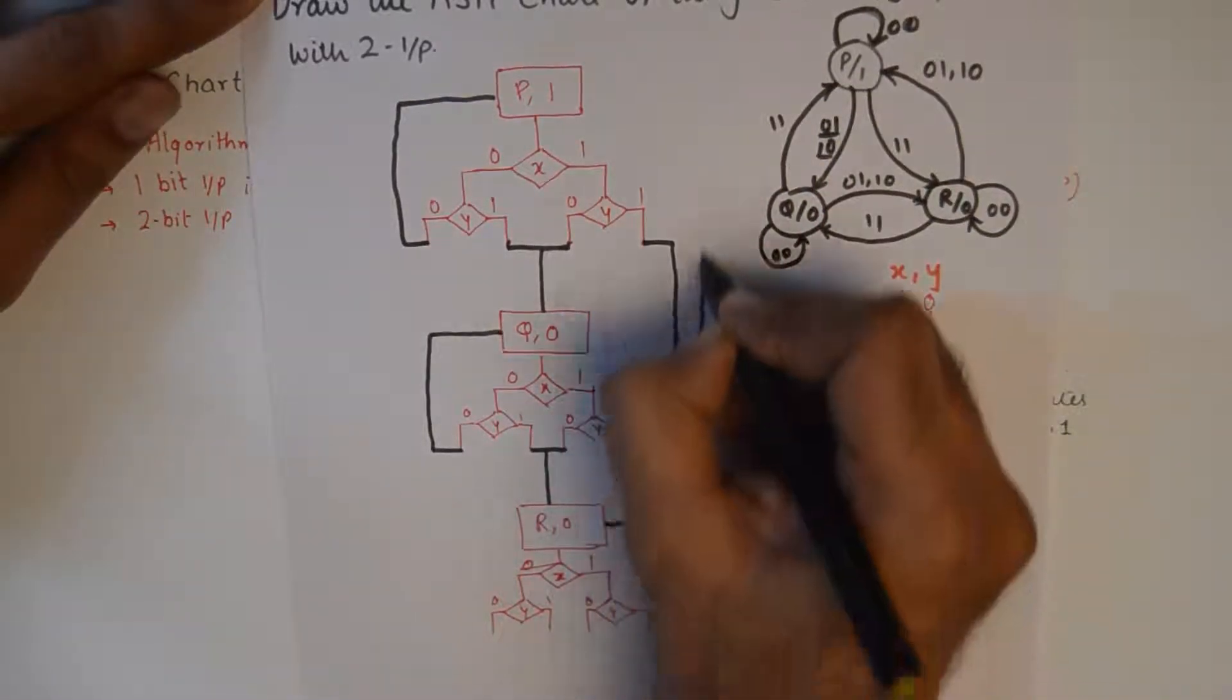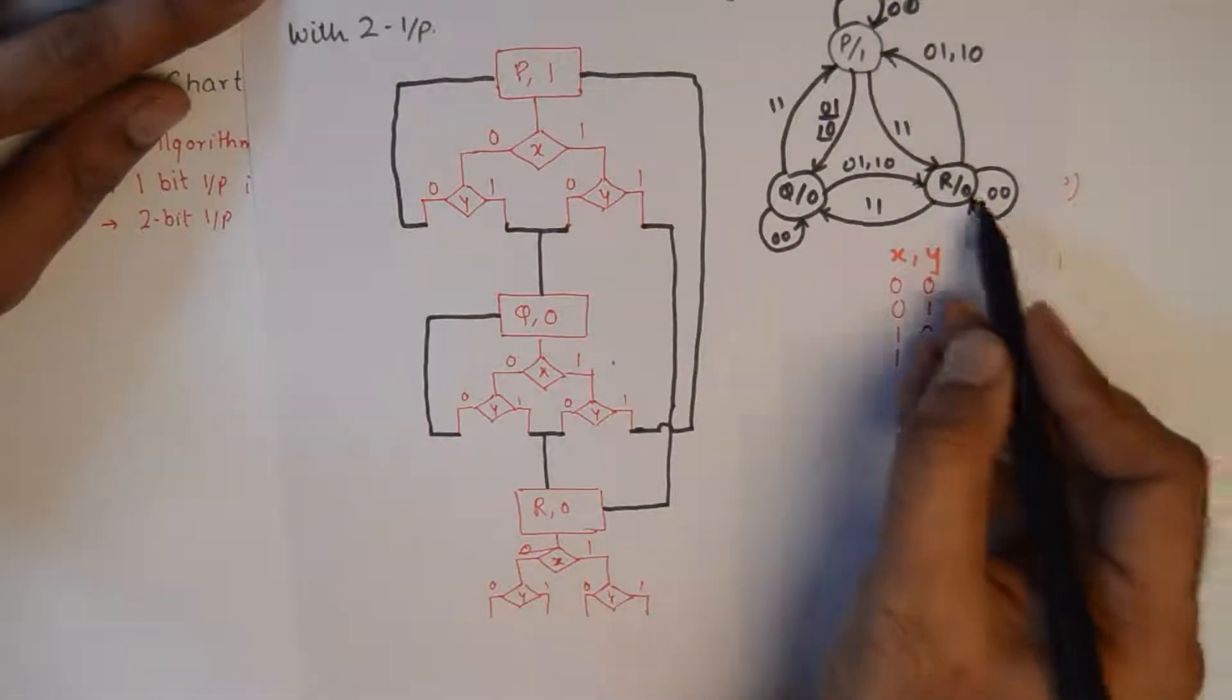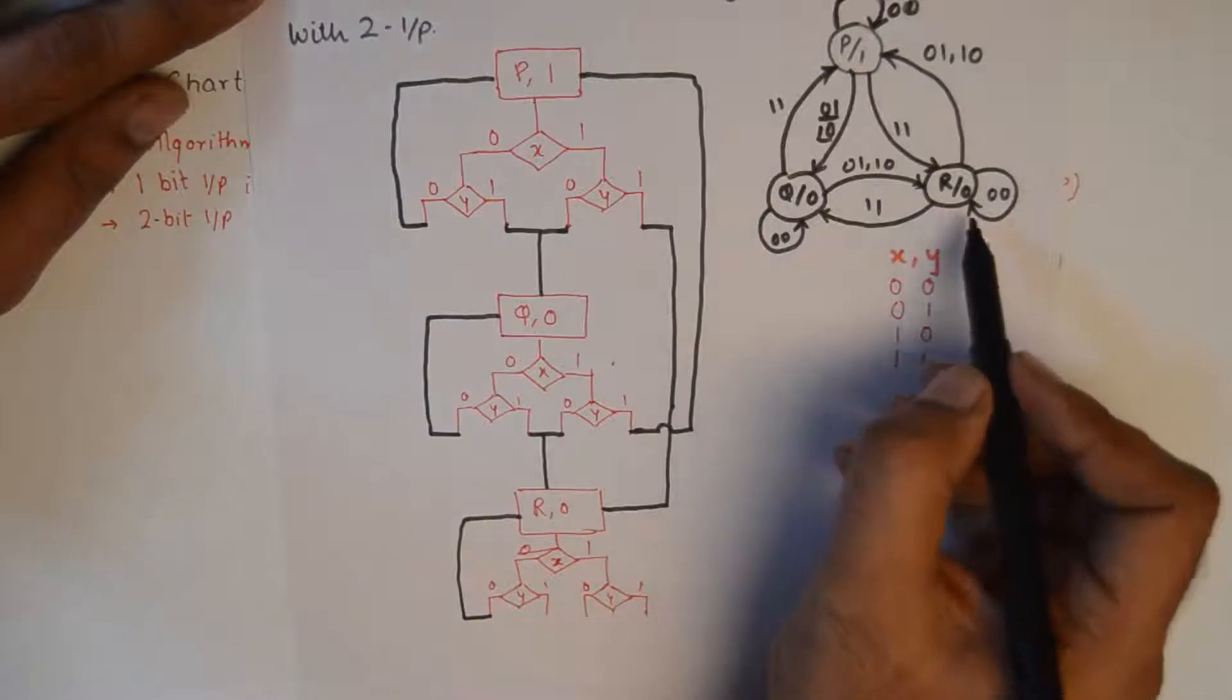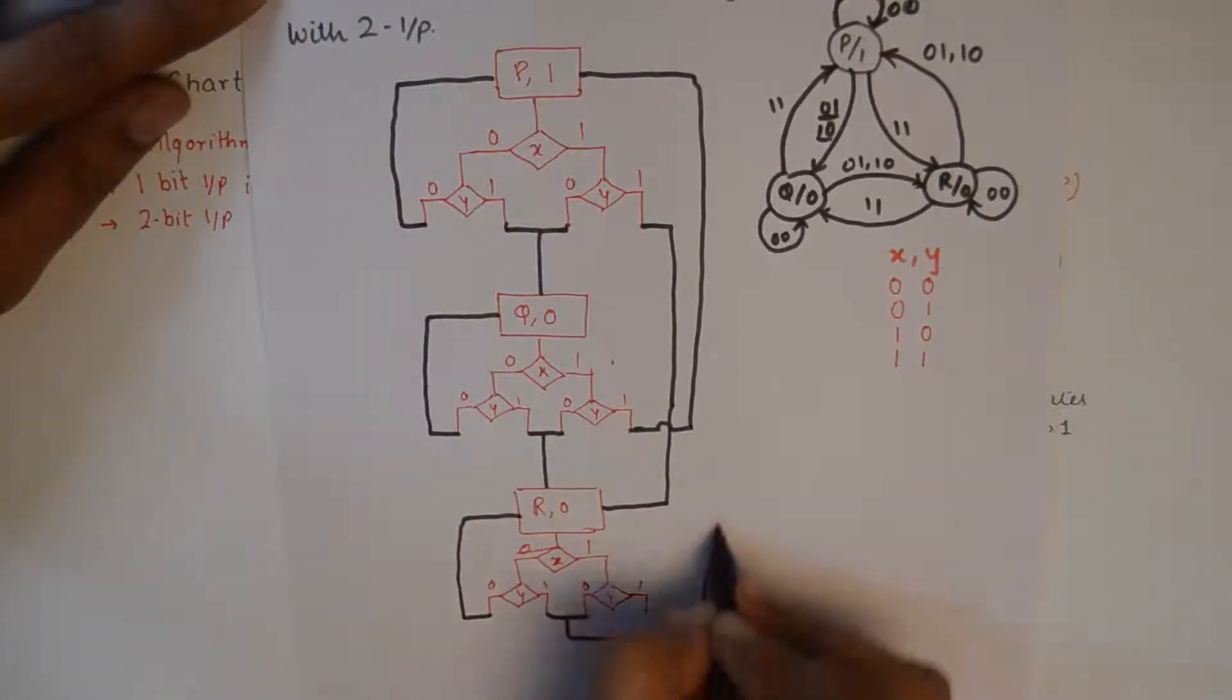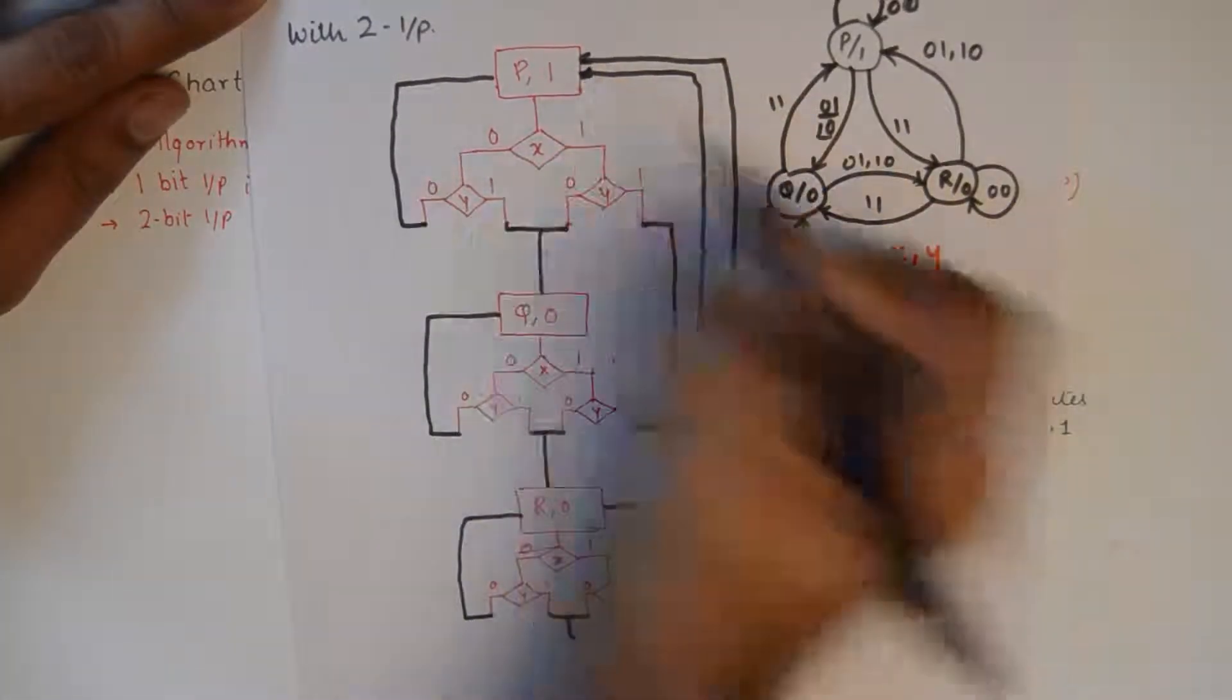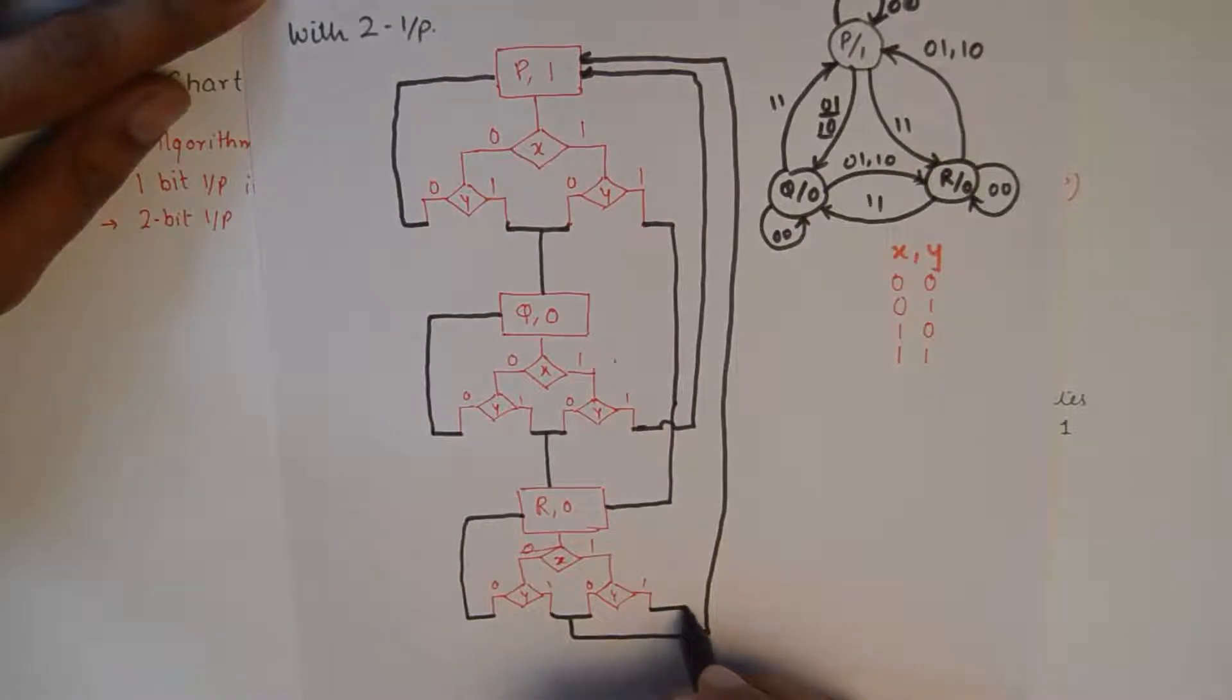So while I am at R, a 00 takes me back to R. And 01 and 10 takes me to P, so I combine these two, they are taking me to P. And at R if I get a 11 I go to Q, so 11 will take me to Q.